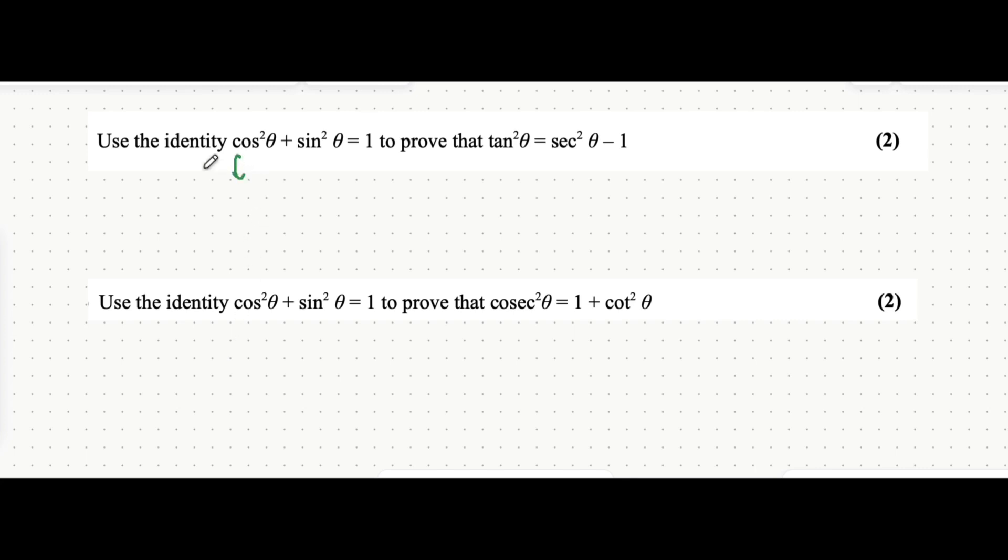So for this first one, if we divide everything on both sides of the expression by cos squared theta, cos squared over cos squared equals 1. Sin squared over cos squared—well, we know that sin over cos equals tan. And in that case, I'm just going to write that out very quickly: sin squared over cos squared equals tan squared.